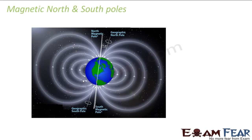Let us first talk about the magnetic north and south poles. When you look at a globe, you have a north pole at the extreme top and a south pole at the extreme bottom. But when we talk about magnetic north and magnetic south poles, the magnetic north pole and the geographic north pole are not the same. Geographic north pole is the normal north we talk about in our maps. Geographic north and south poles are not the same as the magnetic north and south poles — that was what was observed.